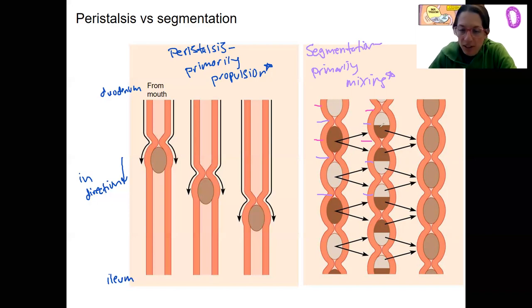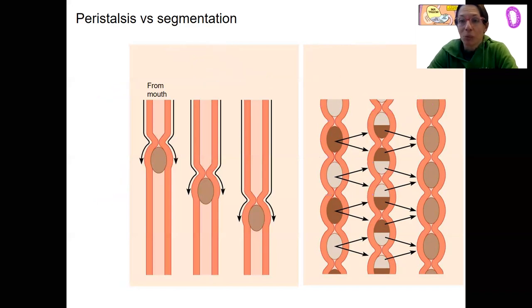This is what's happening here as the color changes. So this has been, this is intestinal juices. We've mixed it up. Some propulsion occurs via this mechanism, but the primary goal of this is mixing. So this is unique to the small intestine. Some does occur in the large intestine as well.